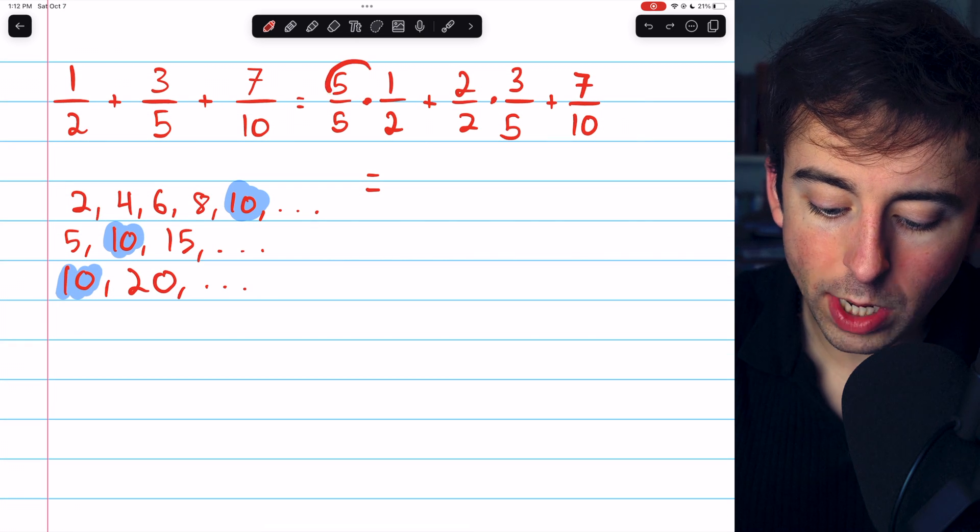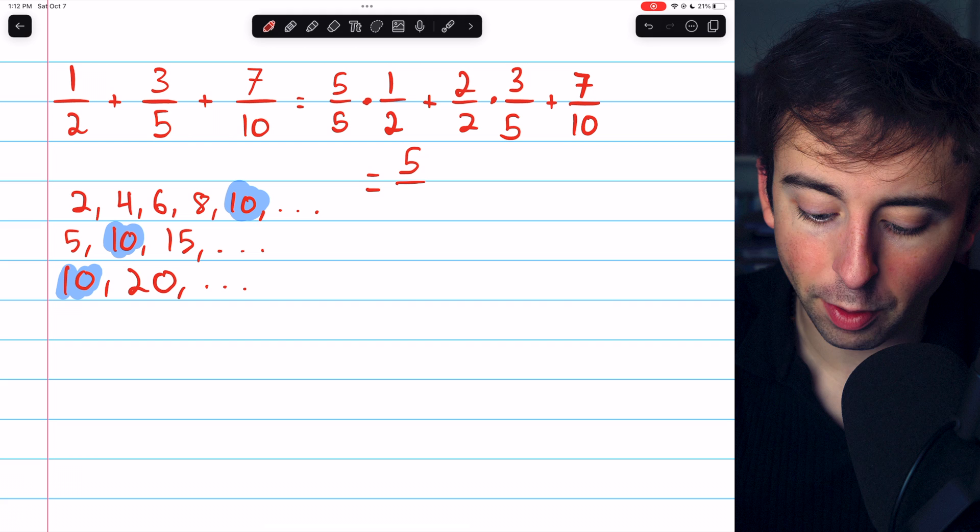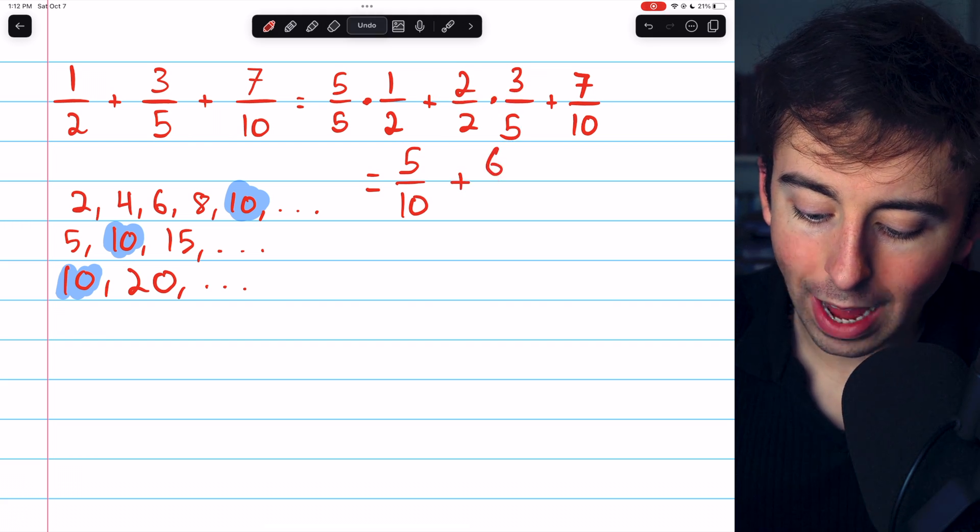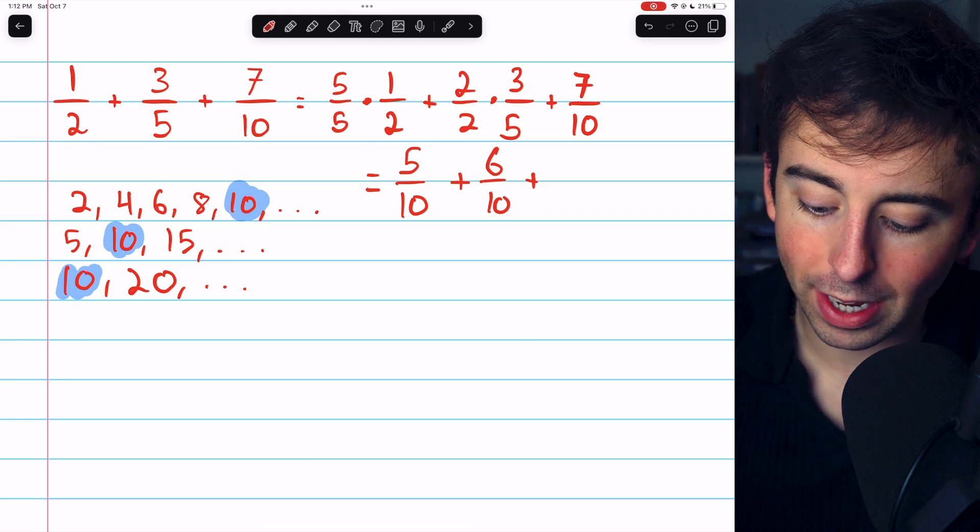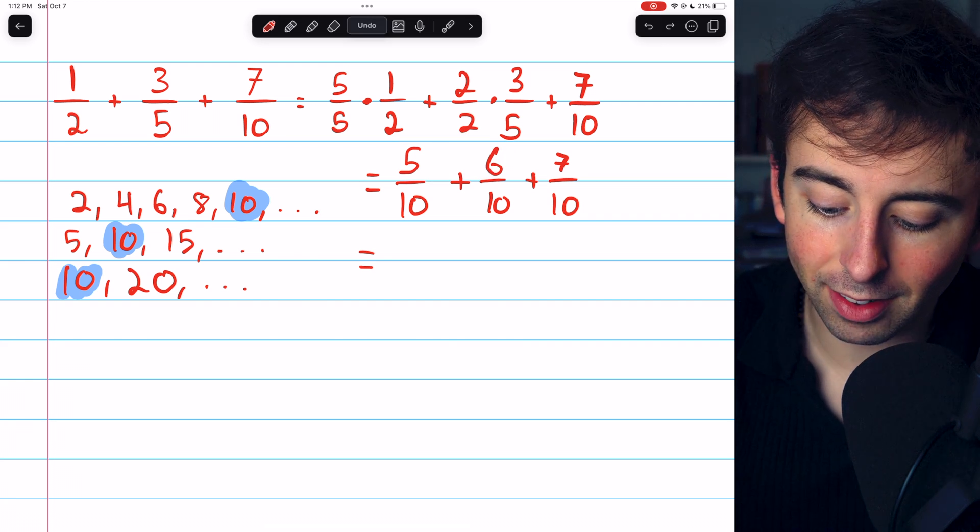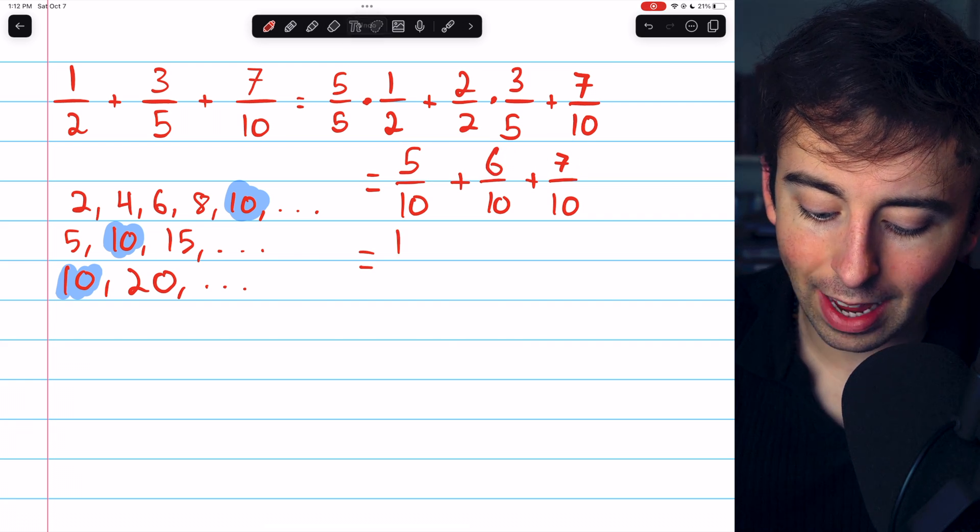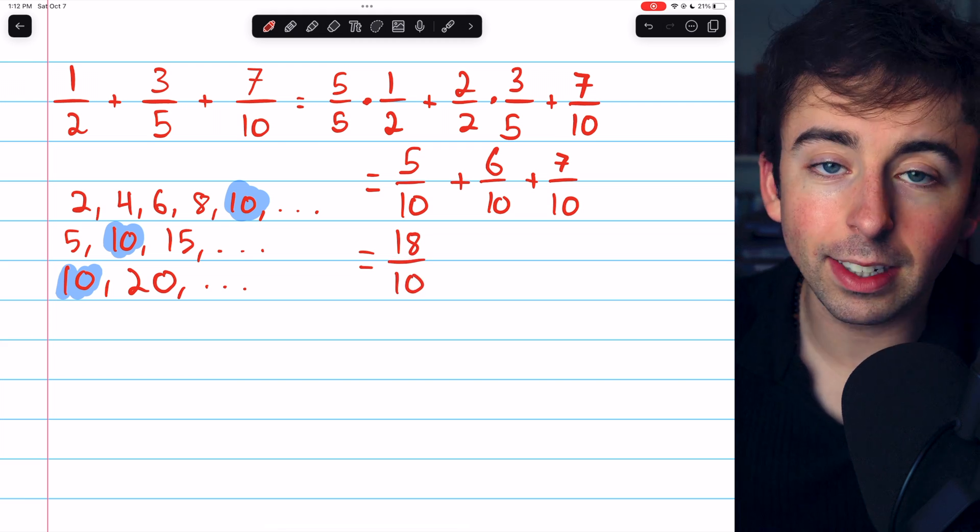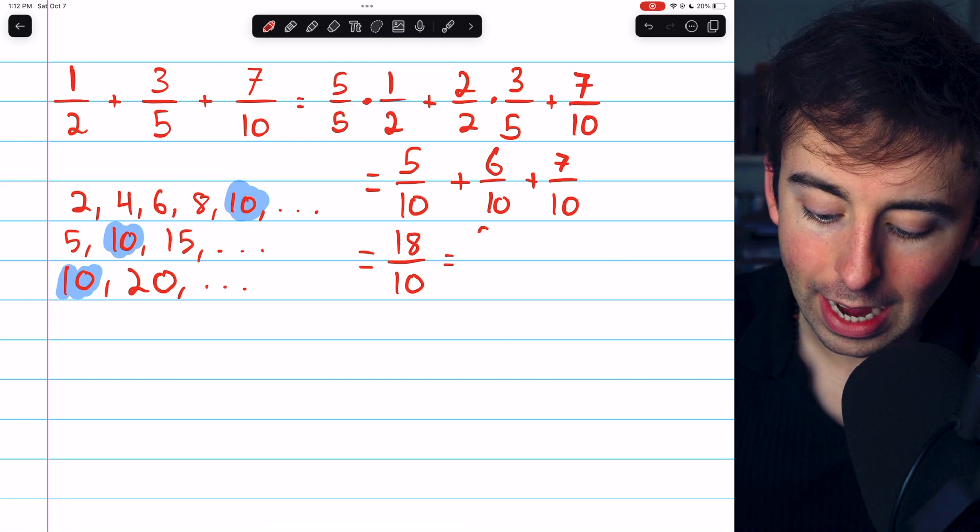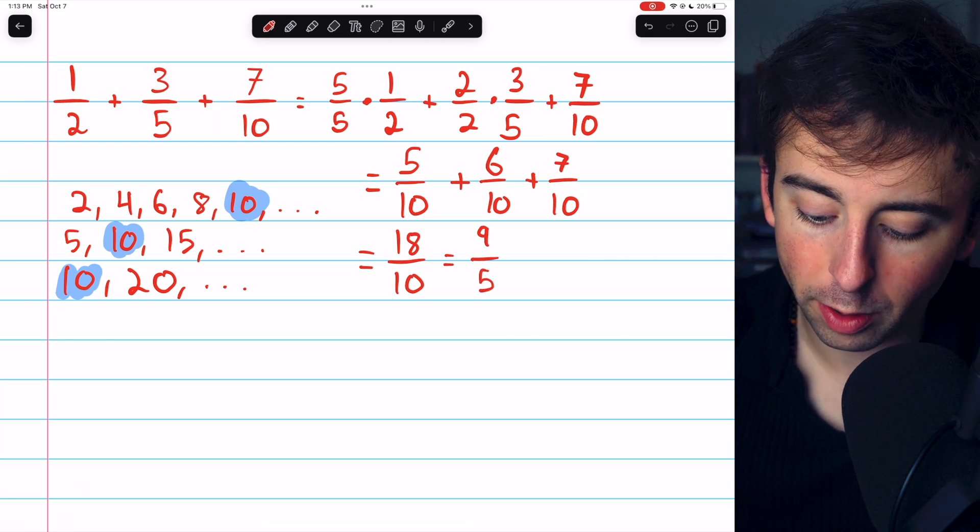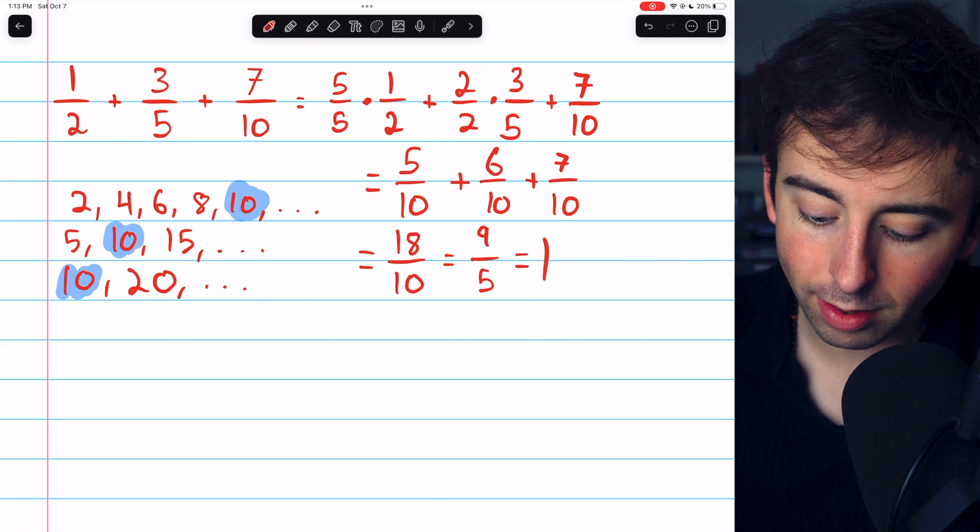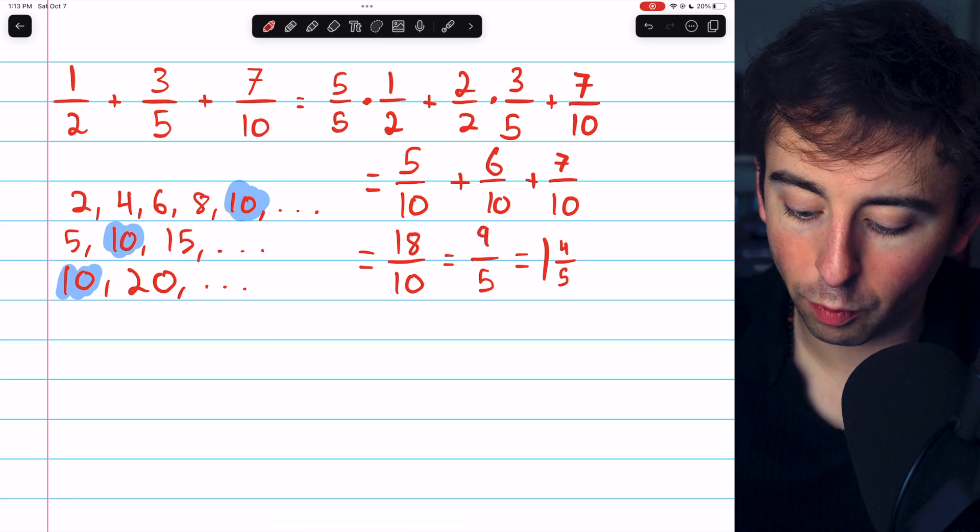Doing all this multiplication, we have 5 over 10. That's our first fraction. And then we're adding 6 over 10. And then we're adding to that 7 over 10. Now that we have common denominators, we can just add up the numerators. 5 plus 6 is 11, plus 7 is 18. So our answer is 18 over 10, which we could reduce by a factor of 2 and get 9 over 5. Or if you prefer mixed numbers, 5 goes into 9 once with 4 left over, so 1 and 4 fifths.